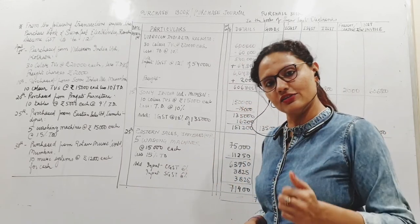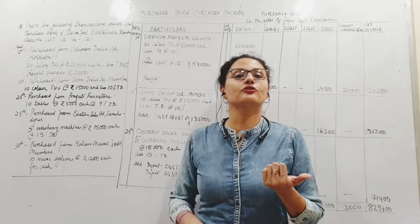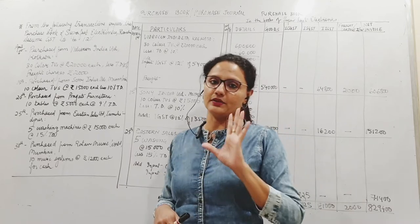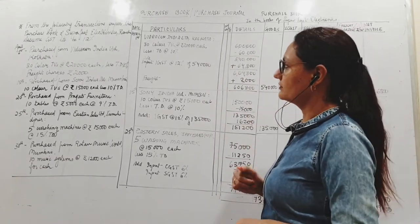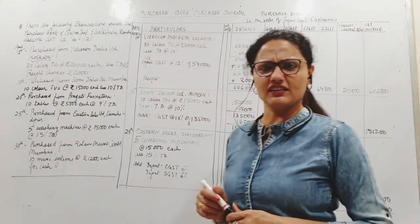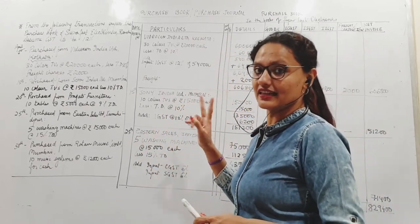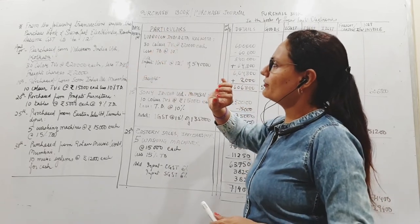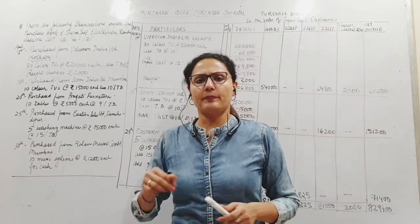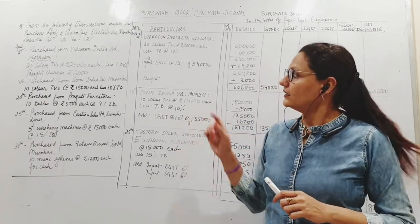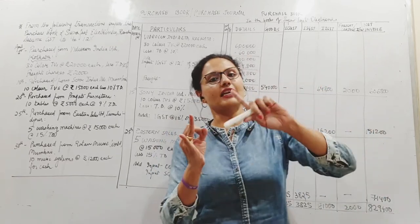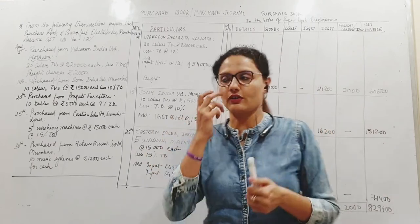First of all, assume GST to be 12 percent. GST 12 percent meaning IGST. If it is 12 percent IGST, if it has to be CGST and SGST intrastate, it will be half - 6 percent and 6 percent. Purchase from Video Con India Limited, Kolkata. Kolkata and Ranchi - not in the same state, so interstate transaction, IGST applicable. 30 color TVs of 20,000 each, less trade discount 10 percent, freight charges 2000 rupees.